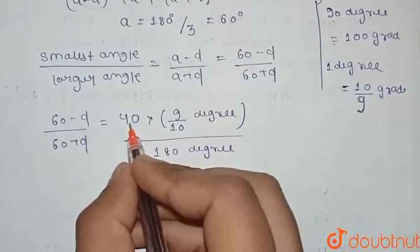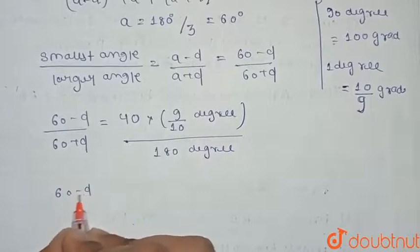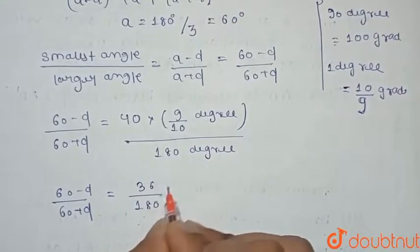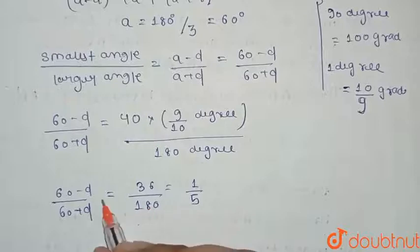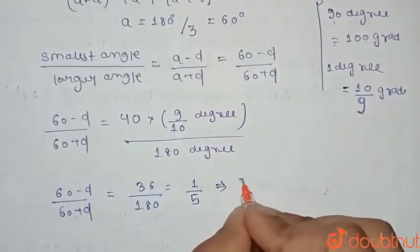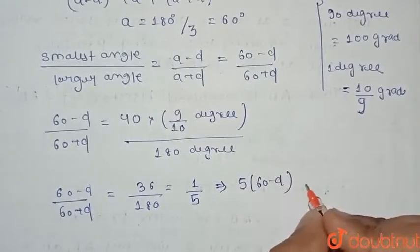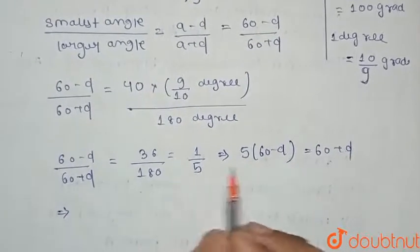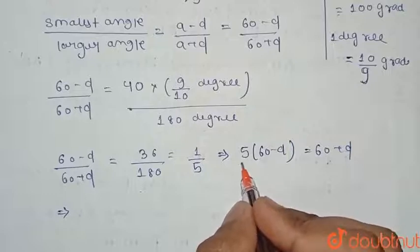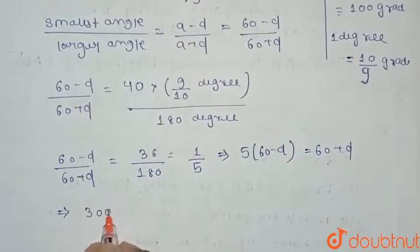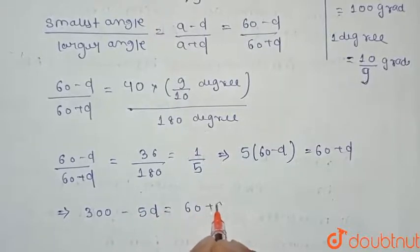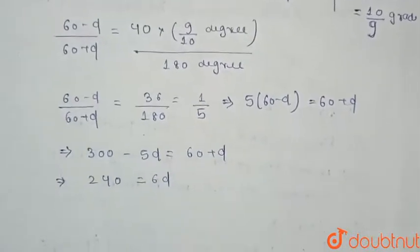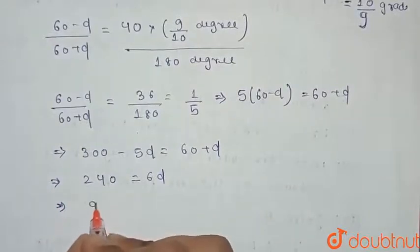So (60-d)/(60+d) = 36/180 = 1/5. By cross multiplication: 5(60-d) = 60+d, which gives 300 - 5d = 60 + d. Solving: 240 = 6d, therefore d = 40.